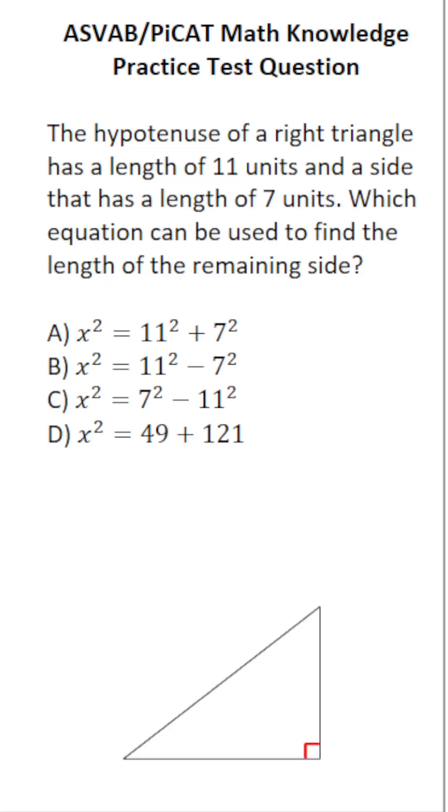This math knowledge practice test question for the ASVAB and PyCat says, the hypotenuse of a right triangle has a length of 11 units and a side that has a length of 7 units, which equation can be used to find the length of the remaining side?